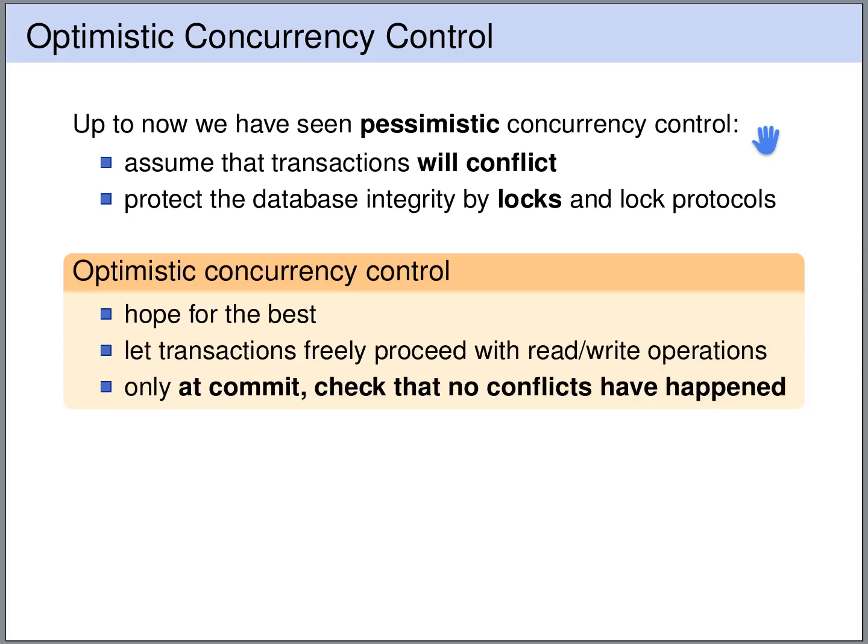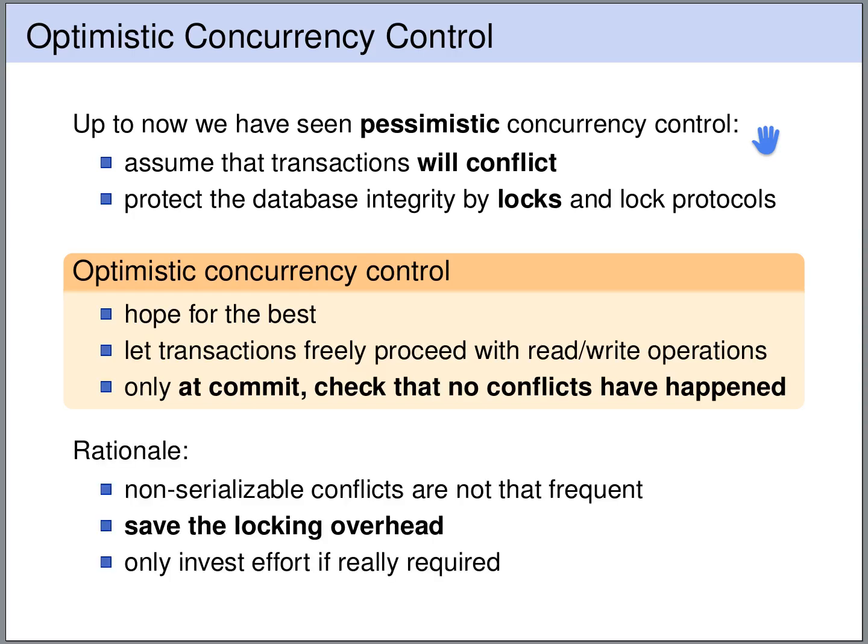Now we will look at optimistic concurrency control. Here we hope for the best — we let the transactions run freely, and only at commit time we check whether conflicts have occurred and whether transactions need to be aborted. The idea is that non-serializable conflicts are relatively seldom. Locking requires a lot of overhead, so by taking the optimistic approach we save this locking overhead. We only invest time and effort if something has gone wrong.